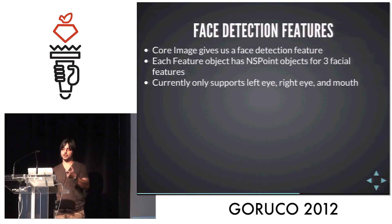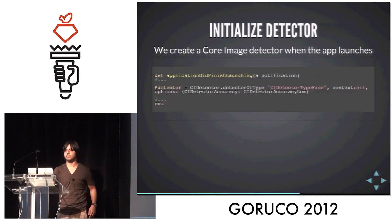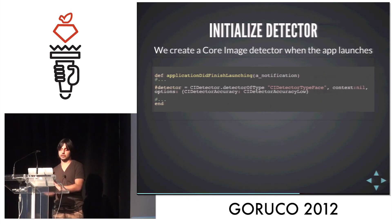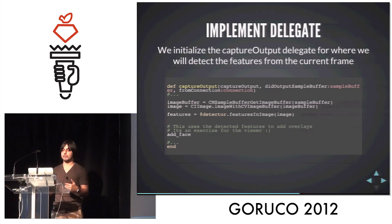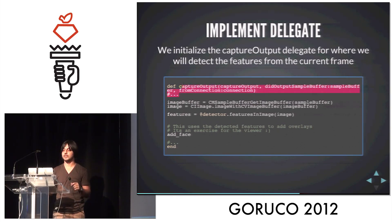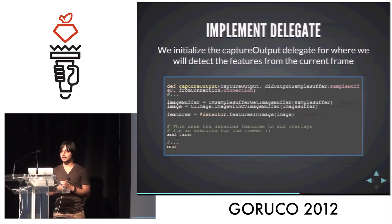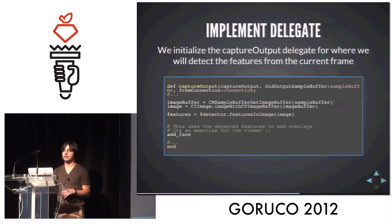Now we're going to do some face detection. Core Image gives us face detection features, and each has an NS point — basically an X and Y value. There are only really three things they're detecting right now: left eye, right eye, and a mouth. Hopefully there'll be more stuff later on. So we create a CI Detector, which is a Core Image detector class, and we give it some low-level accuracy, which is again a constant in the framework. Then we implement the delegate, which gets triggered every single time a frame is buffered. One thing you have to be careful about in Ruby is that the method signature must be exactly the way it is in the docs — if it's not, it will many times fail silently. We get the sample image, get the features, add face, and we're done. I'm leaving that as an exercise when you check out the code later.